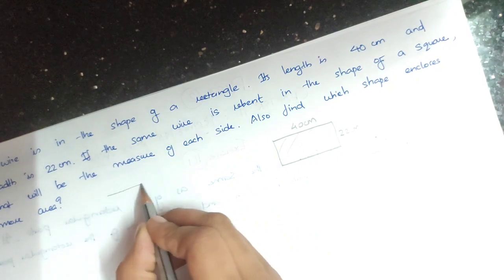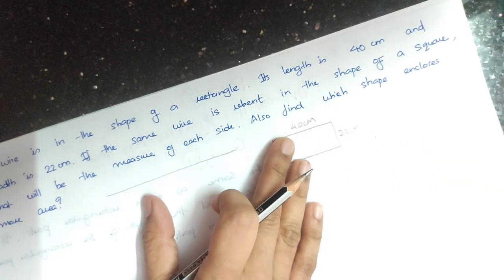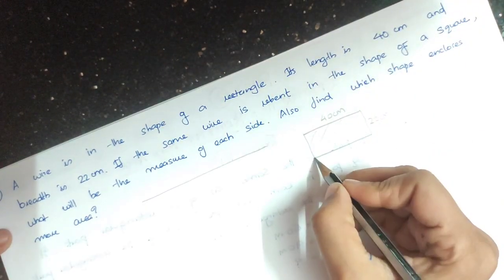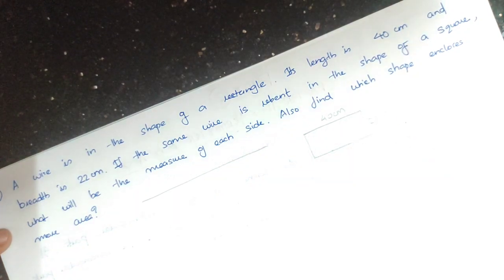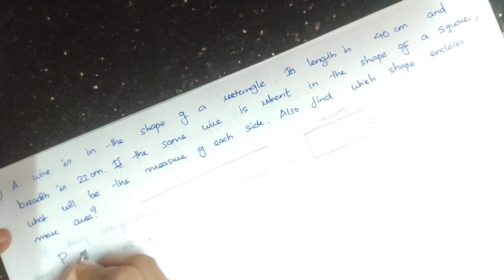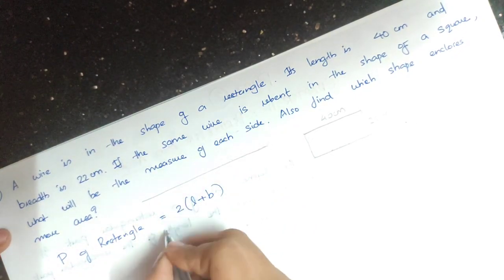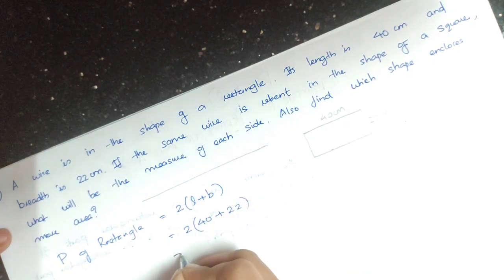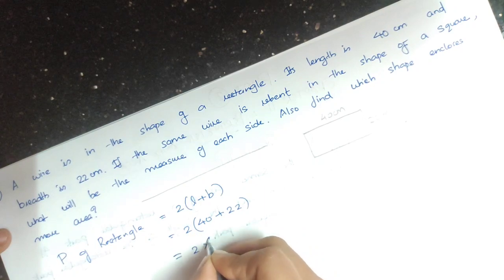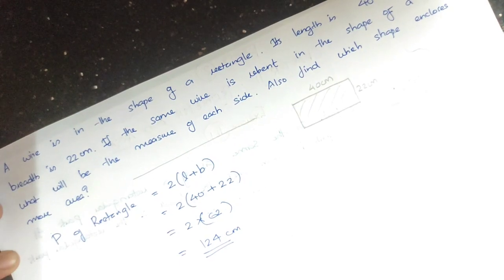The wire length equals the perimeter of the rectangle. Perimeter of rectangle equals 2 into L plus B, equal to 2 into 40 plus 22, which is 2 into 62, equal to 124 cm. Perimeter of rectangle equals 124 cm.